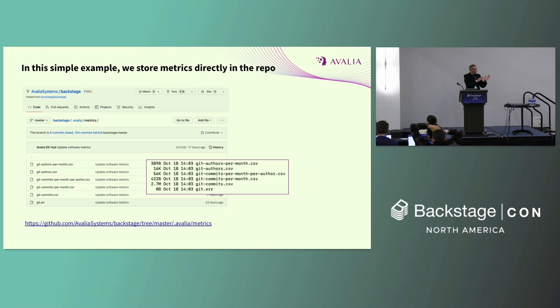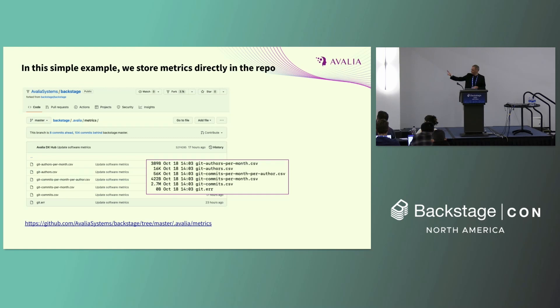The GitHub Action has been deployed. For the demo I forked the Backstage repo, added the action in a custom pipeline, and ran it to compute metrics for the Backstage codebase. The results show that the raw data — one line per commit — is 2.7 megabytes, while the aggregated git authors file is 16 kilobytes. This gives you a clear sense of the size difference with and without aggregation.